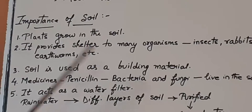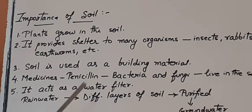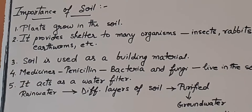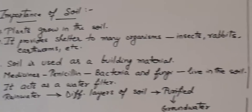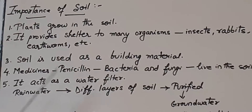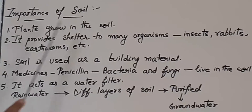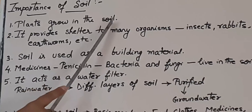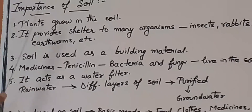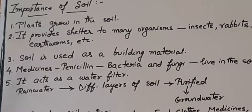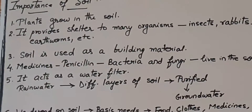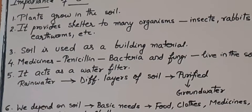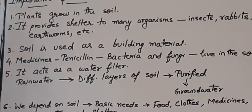Plants take water and minerals from the soil through their roots. We humans and animals depend on plants for food and oxygen. So if there is no soil, no plants will grow and there will be no food for living things like human beings or animals.